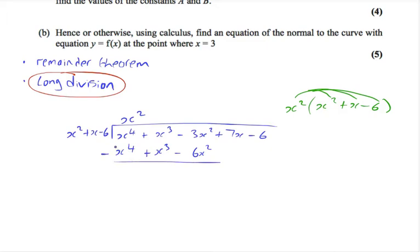And then we subtract these. x to the 4 take away x to the 4 is 0. x cubed take away x cubed is 0. Minus 3x squared take away minus 6x squared. The minus and the minus makes a plus. So we have minus 3x squared plus 6x squared. This gives 3x squared.